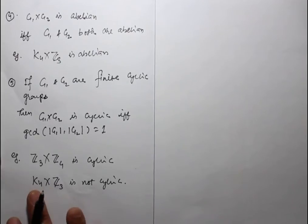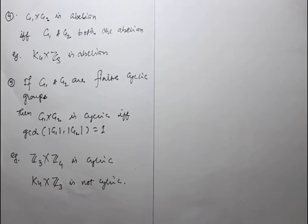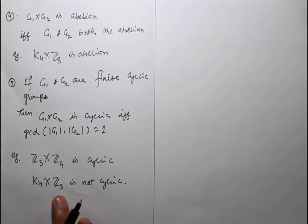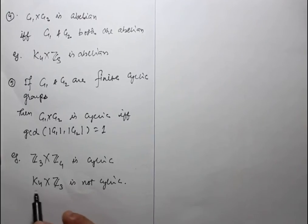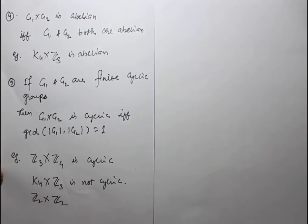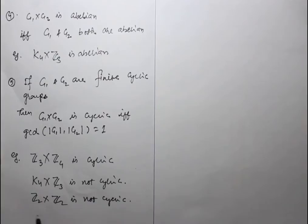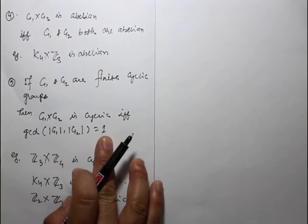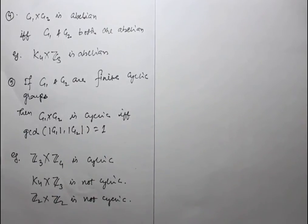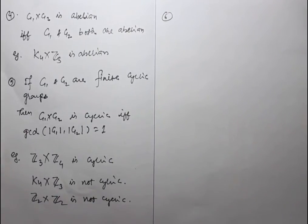We need to check both conditions: whether each group is cyclic, and whether the GCD of their orders is 1. K4 is a non-cyclic group — it is only abelian — so K4 cross Z3 is not cyclic even though Z3 is cyclic. For Z2 cross Z2, the GCD of 2 and 2 is 2, which is not 1, so Z2 cross Z2 is also not cyclic.